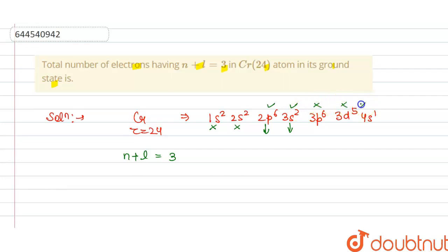So it will give n plus l: 2p⁶ and 3s² will give n plus l. So we have the number of electrons from here, 6 and 2. So the total number of electrons having n plus l equals 3 in chromium 24 is 6 plus 2, that is 8, and this is our answer. Thank you.